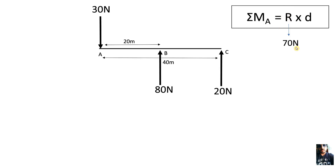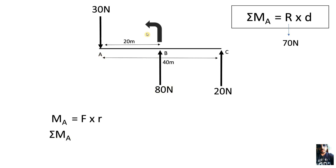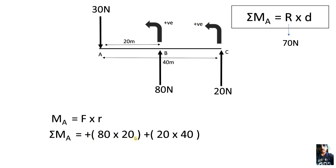Now we have the resultant force which is 70N. We will now do step 2, which is finding the moment. A moment about any point is given by the product of the force and the perpendicular distance. Now let's find the net moment of the system. The 80N force about point A generates an anticlockwise moment. By our sign convention, we consider anticlockwise moment positive. The net moment will be equal to 80 times 20, plus 20 times 40.